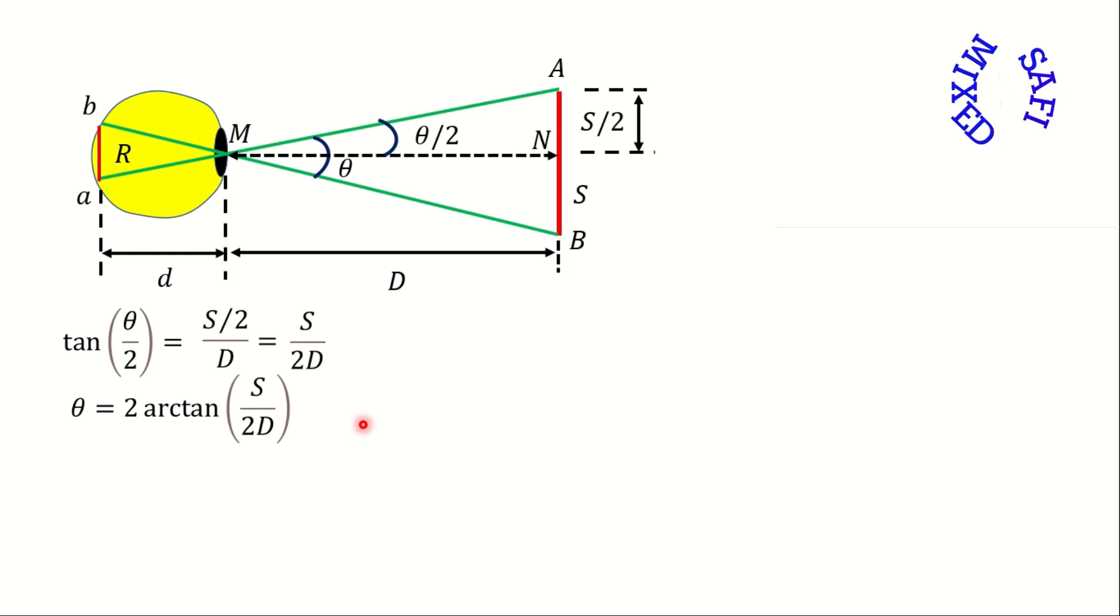However for small value of theta this equation can be approximated to the simple form, that is tan(θ) equals S divided by D. For small theta we can also write for the apparent size R as tan(θ) equals R divided by d.